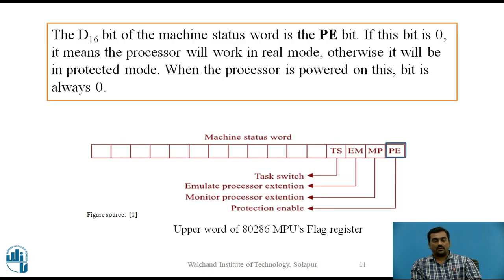The upper word of the 80286 flag register is called the machine status word. The D16 bit is the PE bit, which stands for protection enable. If this bit is 0 the processor works in real mode; otherwise it will be in protected mode. When the processor is powered, this bit is always 0, meaning the processor always starts in real mode.